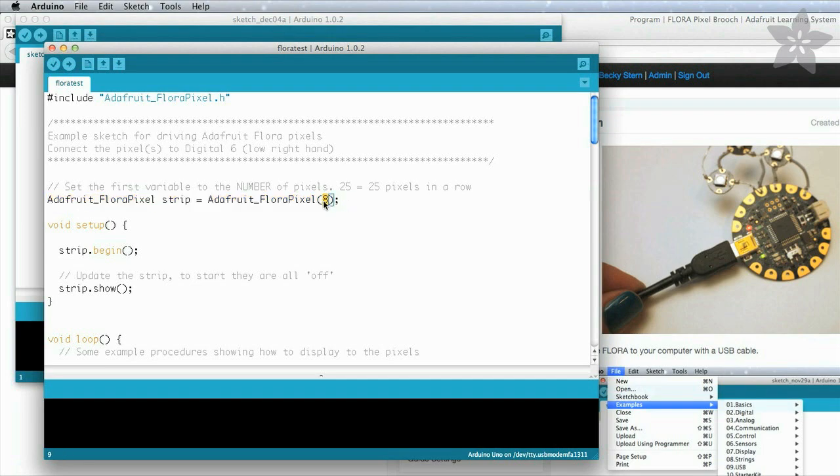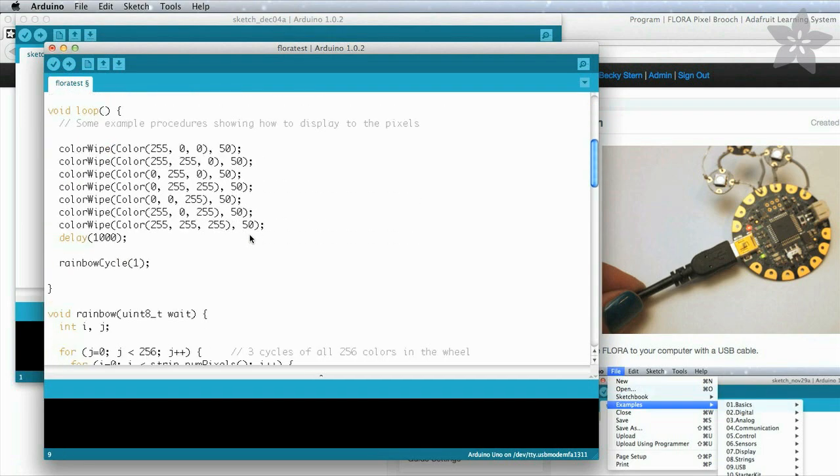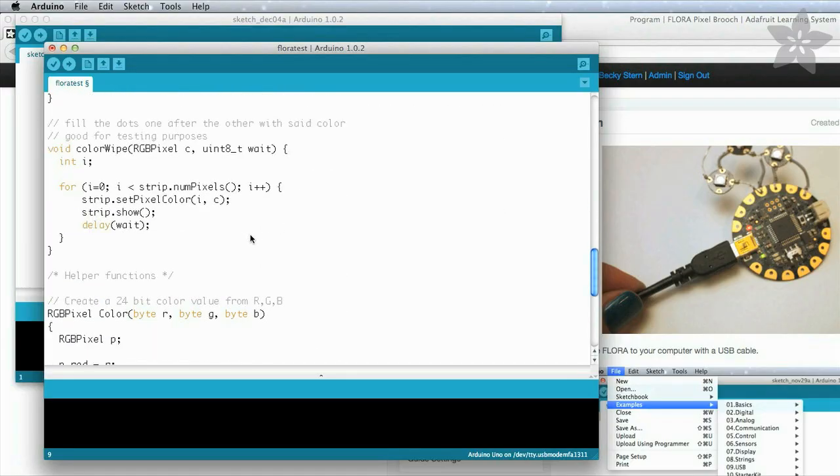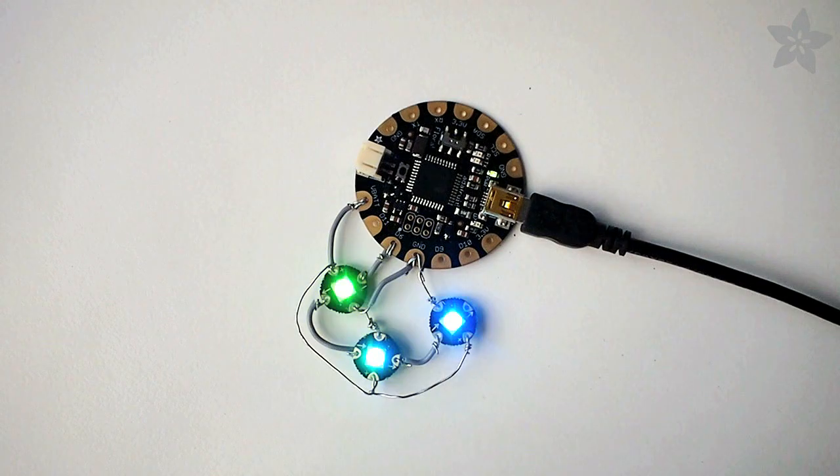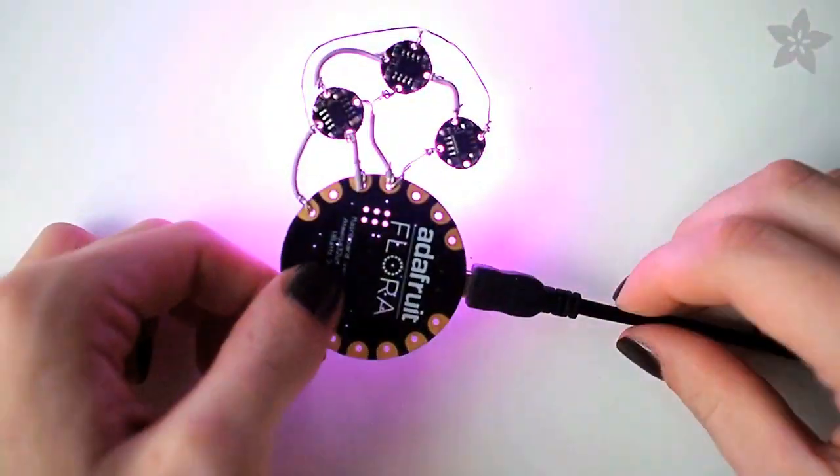Start by running the pixel test code and then when that works you can change it to make any kind of animation or color changing you'd like. The yellow lights on board will blink when your program is uploading and then your sketch will run, animating colors as you desire.